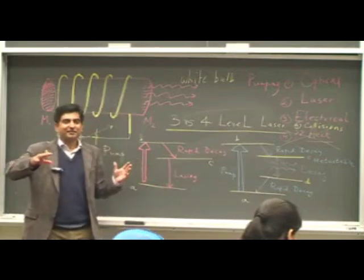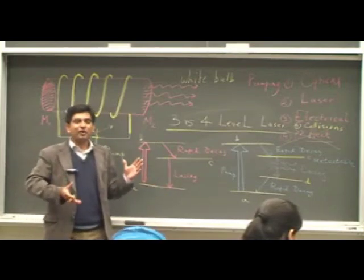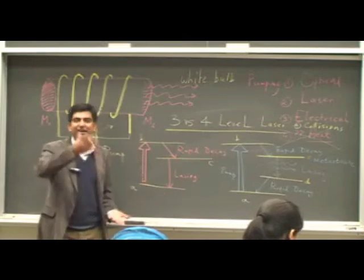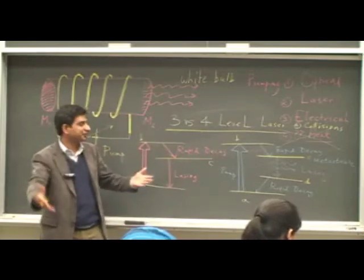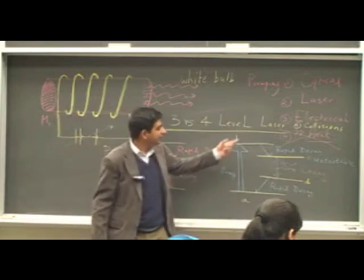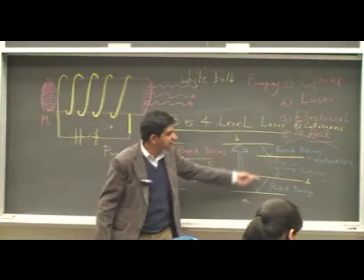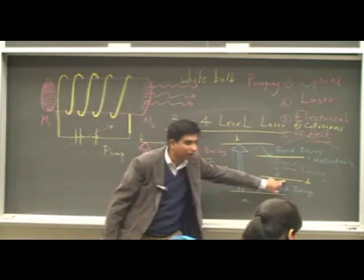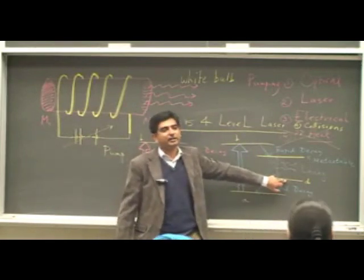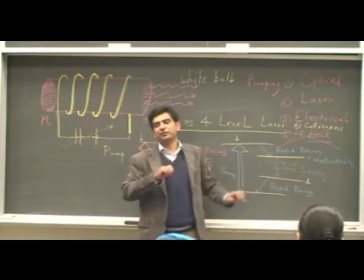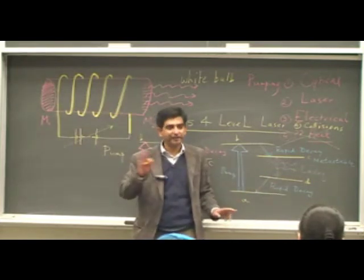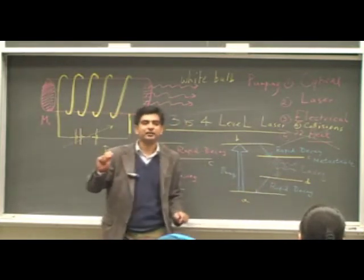So at least you have to move almost half of the electrons in the state A from the state A to higher state before you can achieve population inversion. But here, even the population inversion is readily achieved because this is not the ground state. To start off with, this state had a lower population of electrons. Agreed? As compared to the ground state, G.